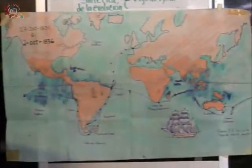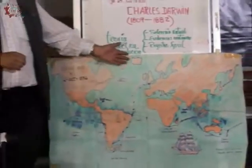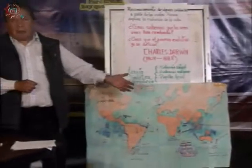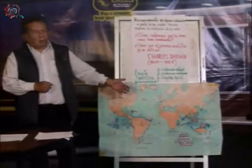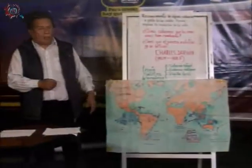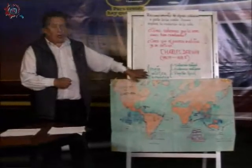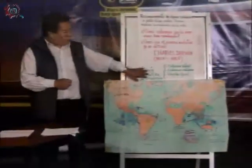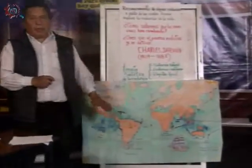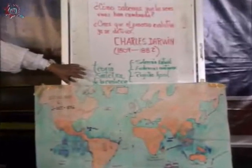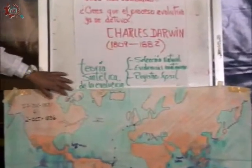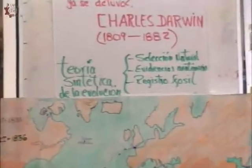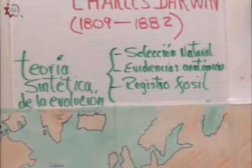¿Cuál es la importancia de Charles Darwin? A pesar de todos los estudios que hizo y el viaje que realizó, los científicos de la época no le aceptaban su teoría de la evolución de la vida. Hay otros científicos como Alfred Wallace, que sí lo apoyó mucho, diciendo que sí era posible que hubiera habido evolución, pero que en determinado momento no había evidencias de que eso había existido.